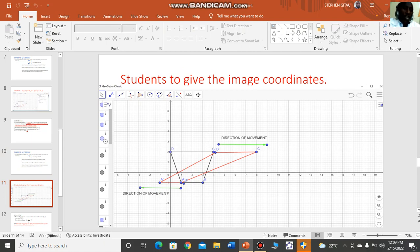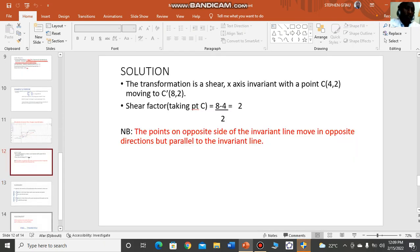We are required to give the image points. I want to believe that you got them as we have in the solution slide. In this case, A has moved in the opposite direction to C and D. A and B move in the negative x-axis direction, while C and D move in the opposite direction, the positive x direction. This is what we had hinted on earlier: the transformation is a shear, x-axis invariant, with the point C(4,2) moving to C''(8,2). Shear factor being 8 minus 4 over 2 to give you 2. The most important thing to note here is that the points on opposite sides of the invariant line move in opposite directions, but parallel to the invariant line.